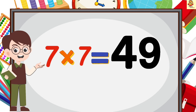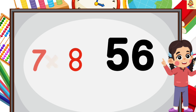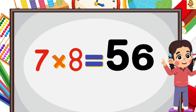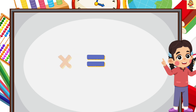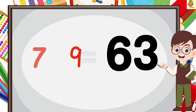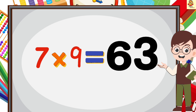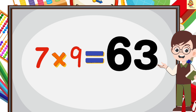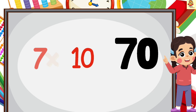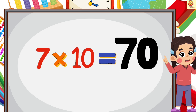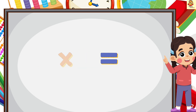7 7's are 49, 7 8's are 56, 7 9's are 63, 7 10's are 70.